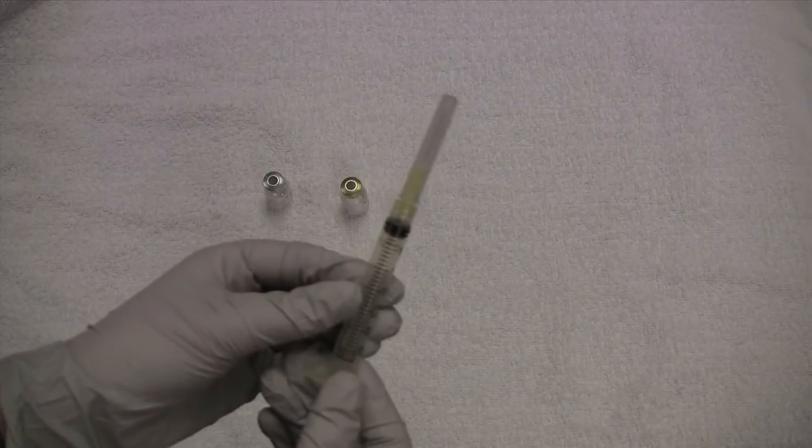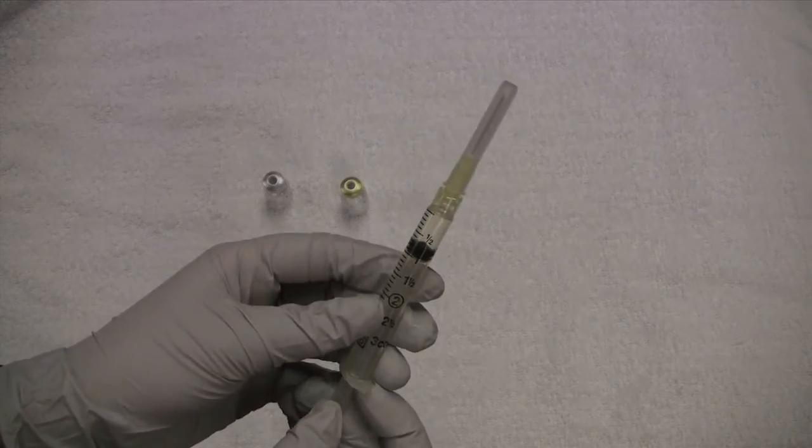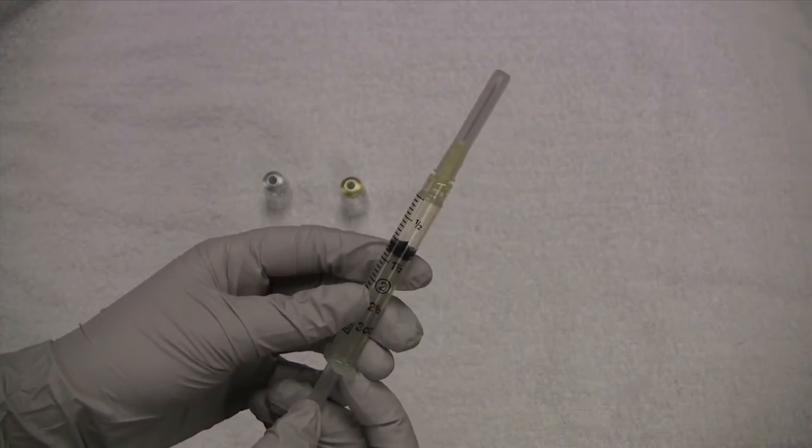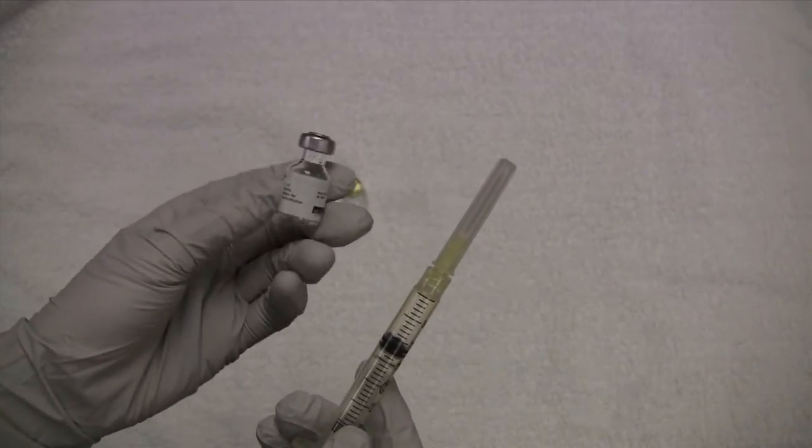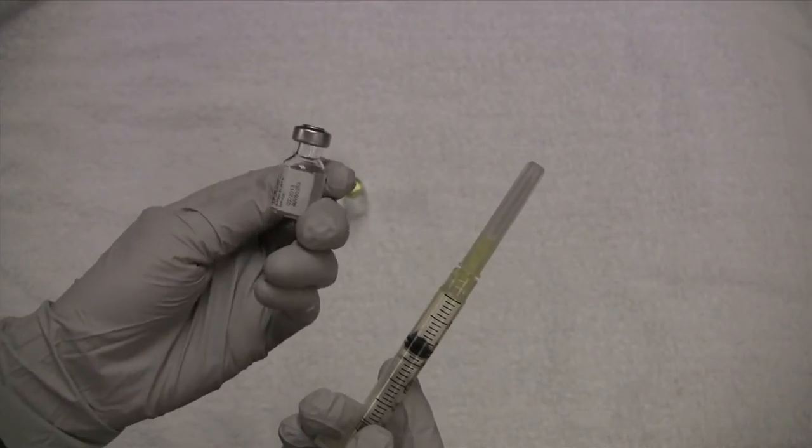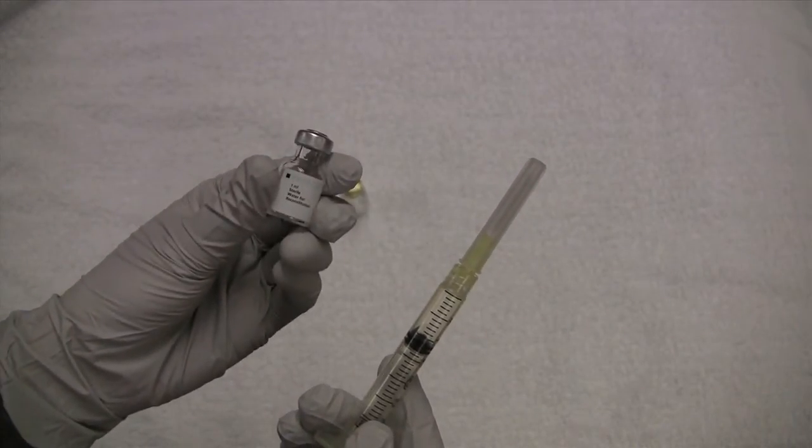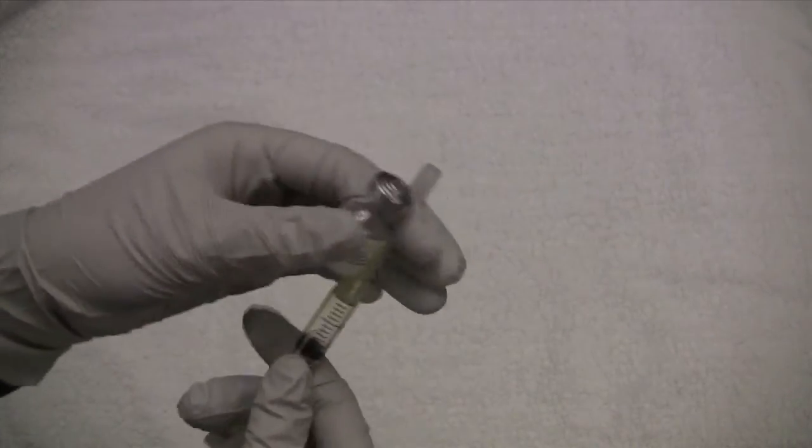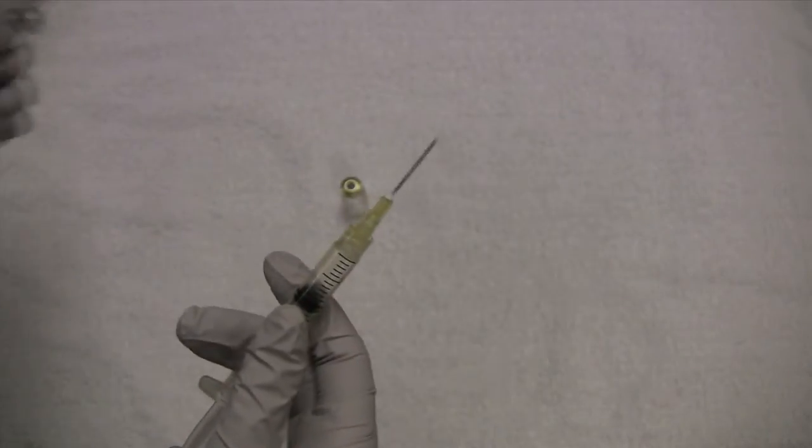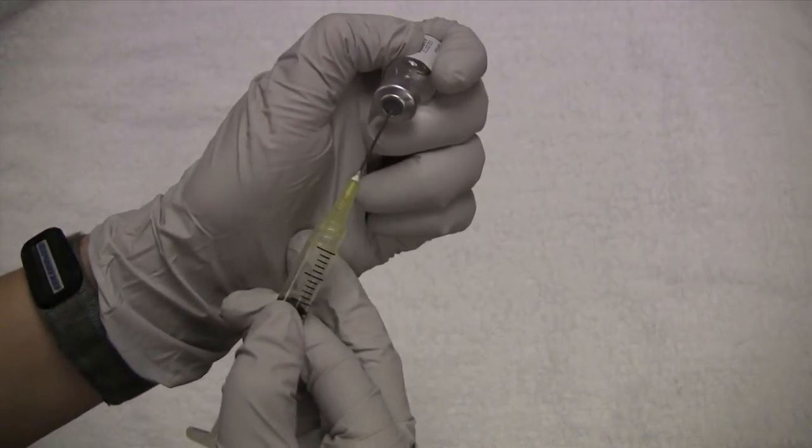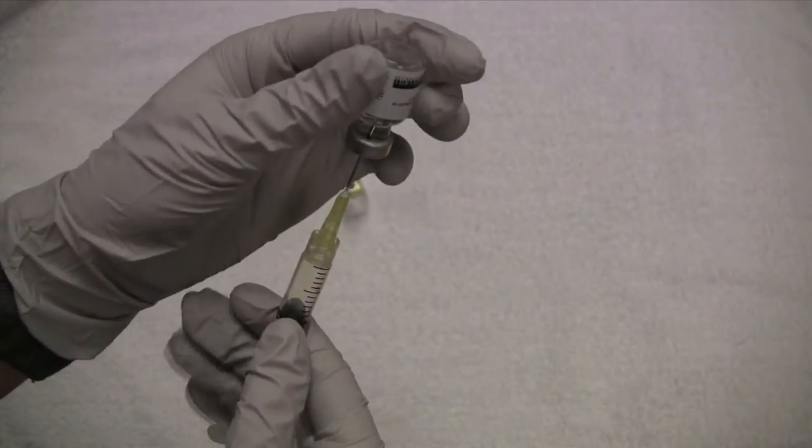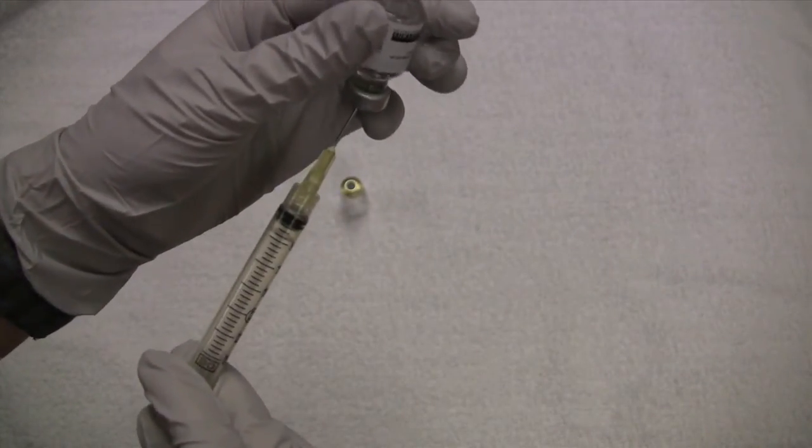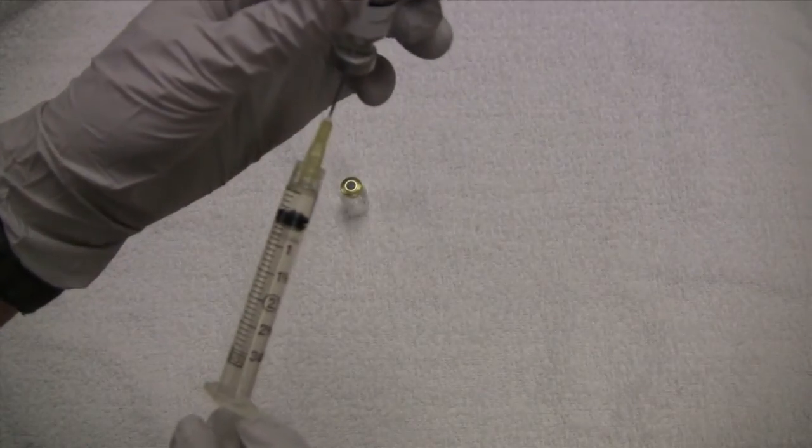Next I have my 3 mL syringe already put together. I'm going to pull back and draw in 1 mL of air. And I want to inject air into the vial of water, which allows for easier retrieval of the sterile water. Air goes in, water comes out.